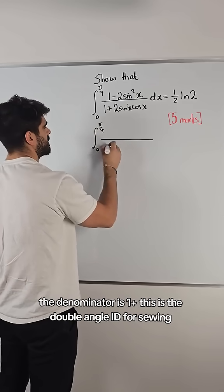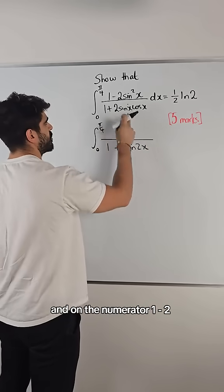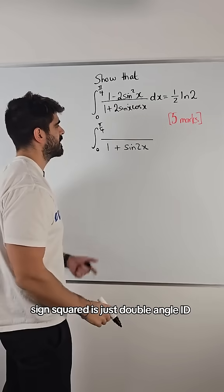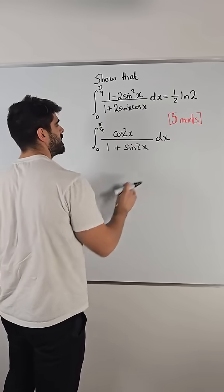The denominator is 1 plus, this is the double angle identity for sine. And on the numerator, 1 minus 2 sine squared is just the double angle identity, or one of the double angle identities for cos 2x.